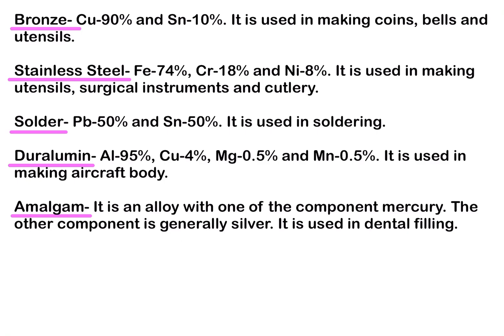Solder is 50% lead and 50% tin and is used in soldering. When lead and tin are mixed together it lowers the melting point of either tin or lead, and because of that we can use it for joining or soldering electrical parts.